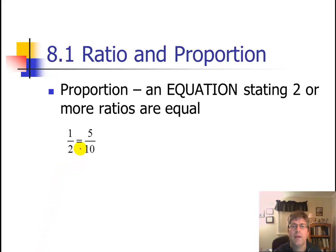Now a proportion is simply an equation. So a proportion has an equal sign, stating two or more ratios are equal. So the ratio 1 half equals 5 tenths. That is a proportion. And you will see that we'll be given three of the four pieces of a proportion, and we'll have to solve for the remaining one.